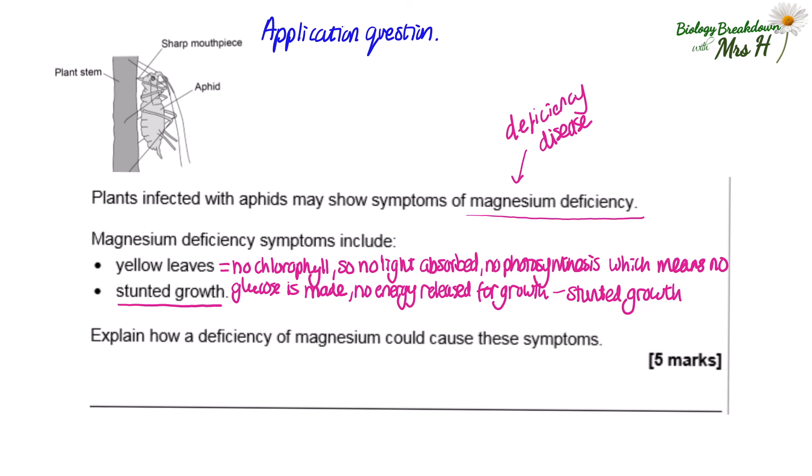And just to add, I've also seen similar questions but linked to why plants affected by tobacco mosaic virus have stunted growth. Because the tobacco mosaic virus causes leaves to be discoloured, the answer is going to be the same. Where you have no chlorophyll, there'll be no light to absorb, no photosynthesis, etc. So it will be the same answer.